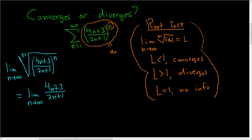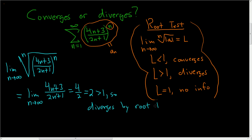Now here, you look at the degrees — they match, they're both degree 1. So the answer is 4 over 2, which gives you 2. That's bigger than 1, so it diverges by the root test.